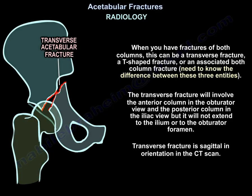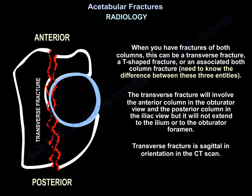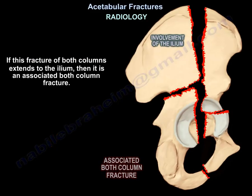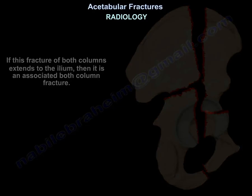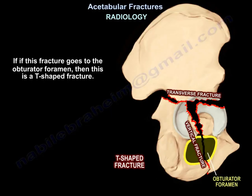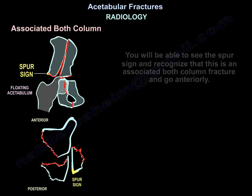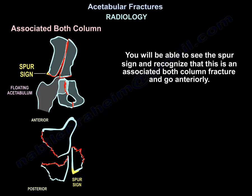The transverse fracture involves the anterior column in the obturator view and the posterior column in the iliac view, but does not extend to the ilium or the obturator foramen. Transverse fracture is sagittal in orientation on CT. If the fracture extends to the ilium, it becomes an associated both column fracture. If it extends to the obturator foramen, it becomes a T-fracture. You should be able to recognize all three — associated both column, transverse, and T — on both x-ray and CT. If you see the spur sign, that is an associated both column fracture and you need to go anteriorly.